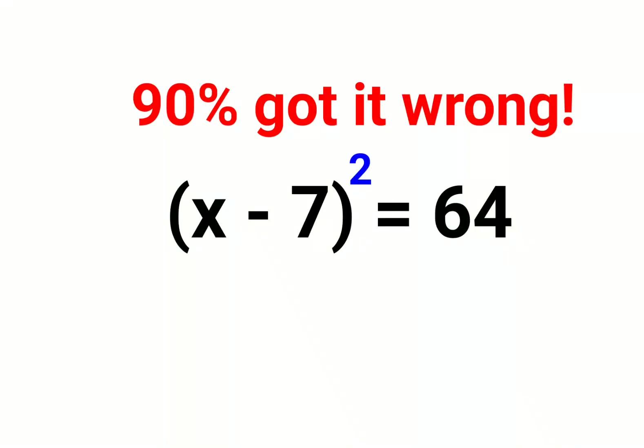Welcome everyone! So today we are going to understand how to find the value of x in the given question which is (x - 7)² = 64, and literally a lot of people misunderstood it.